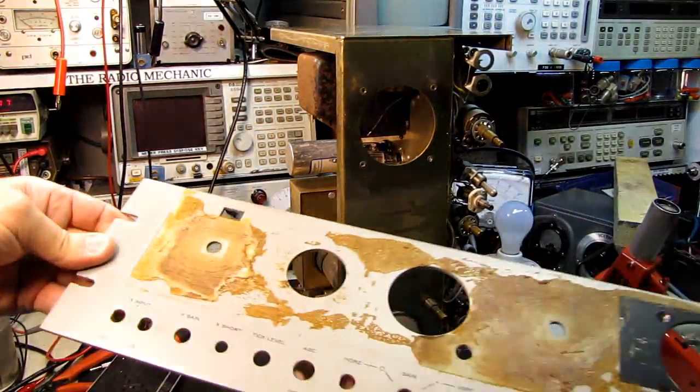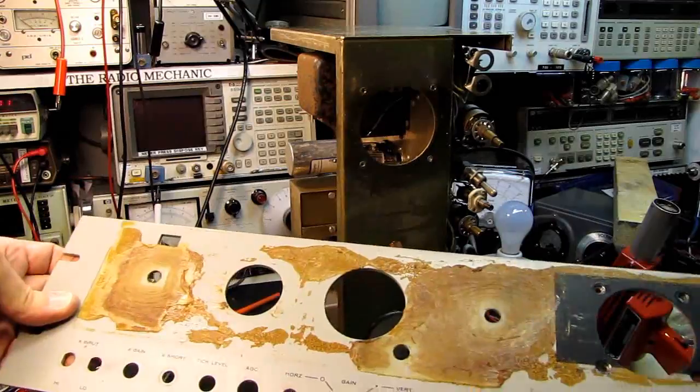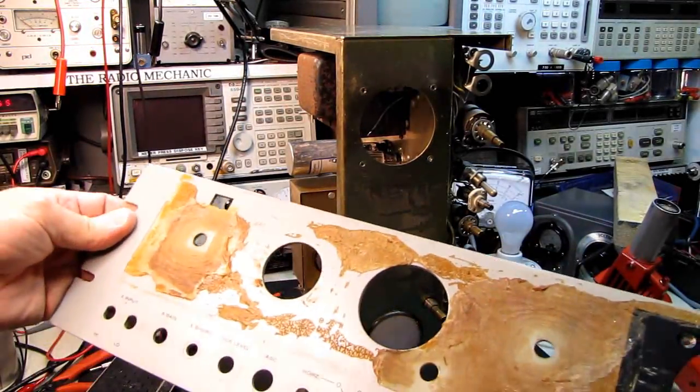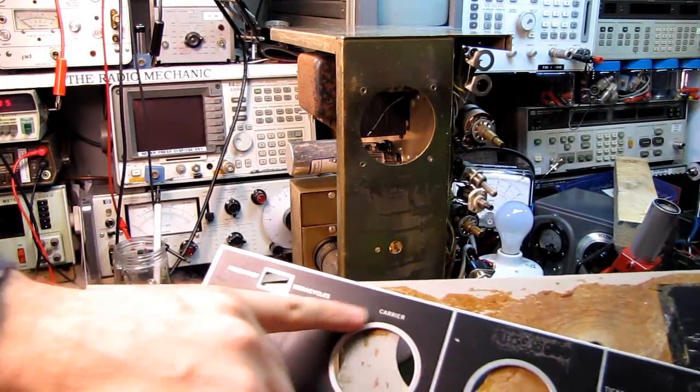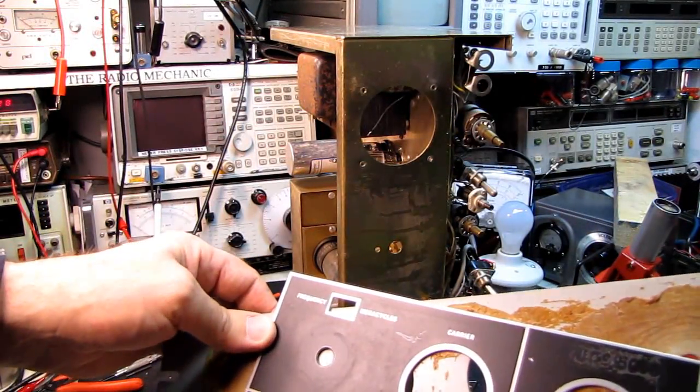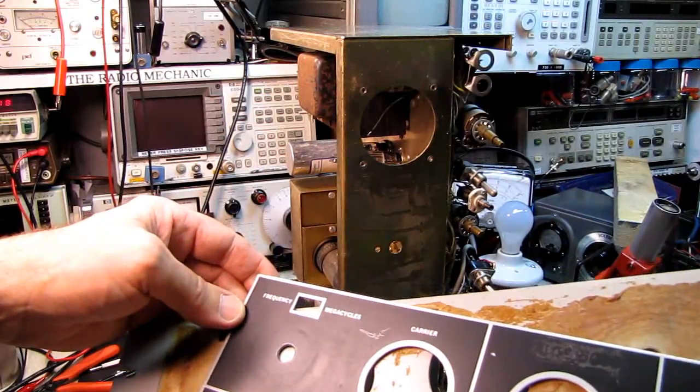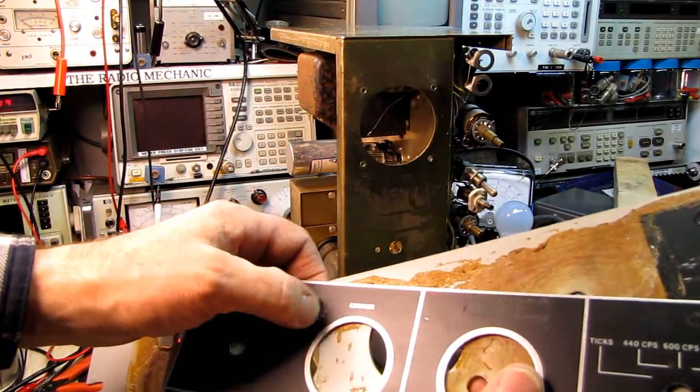We'll get that cleaned up and buffed up. We'll do the same thing to this panel once I have all the adhesive off of it. I'll buff up the paint, put a good coat of wax on it. There's not much I can do about the scratches that are in the anodized finish, or it might be painted, I'm not sure.